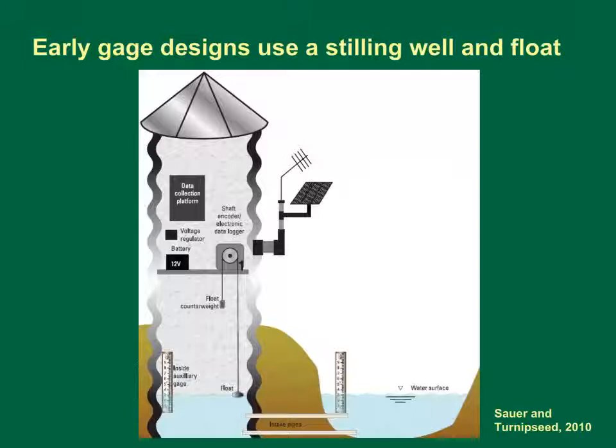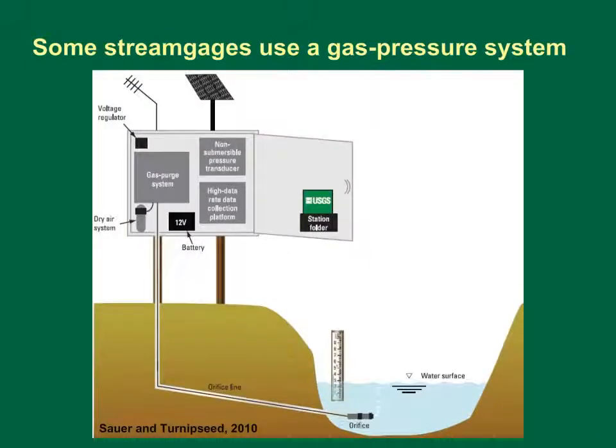In the old days, this would move a pen on a paper chart. Today, movement of the pulley is translated to an electronic signal by a digital shaft encoder, and the signal is recorded by a battery-powered data collection platform. The gray polygon mounted on the side of the gauge is a solar panel, which is used to recharge the battery that is powering the electronics at a site without electric power. The device next to the solar panel is the antenna. Many stream gauges transmit data to satellites several times a day. Increasingly, stream gauges use cellular phones to transmit data, especially when high-frequency communications are desired.